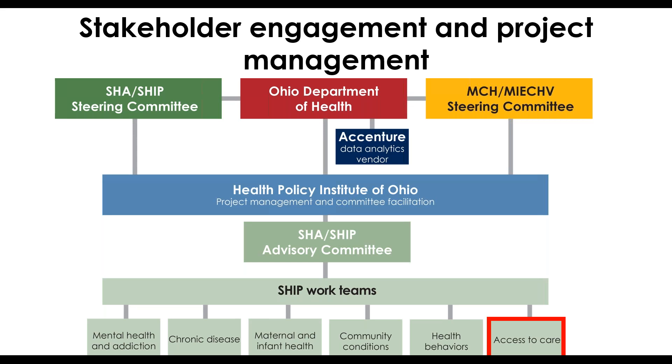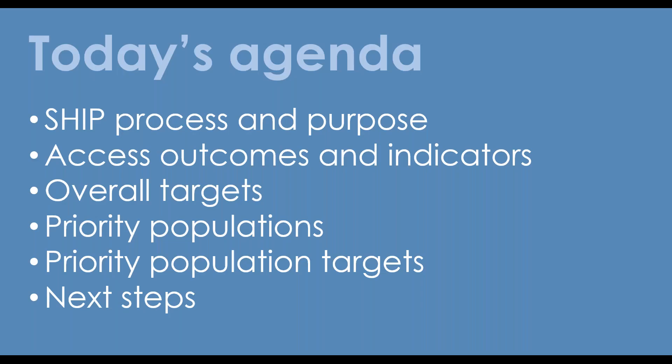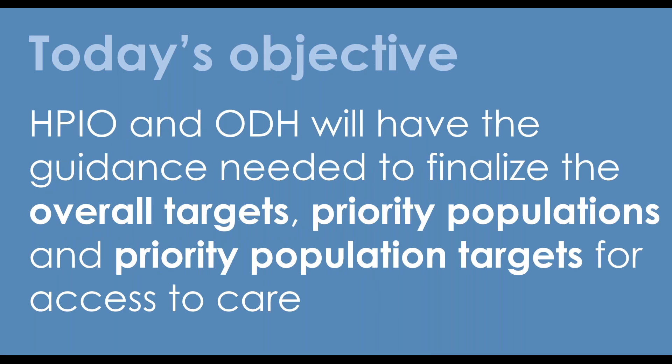You should also be able to see the attendee list for today's webinar participants on your screen. In a moment, Amy will provide some background on the SHIP process and purpose and list out outcomes and indicators for access to care. Then we will move into robust discussion and set the overall targets, identifying priority populations and setting priority population targets. We'll conclude today's meeting with next steps. Our objective is that HPIO and ODH will have the guidance needed to finalize targets, priority populations, and priority population targets for access to care. No final decisions will be made on the call today, but your input will guide the final decisions made over the next few weeks.